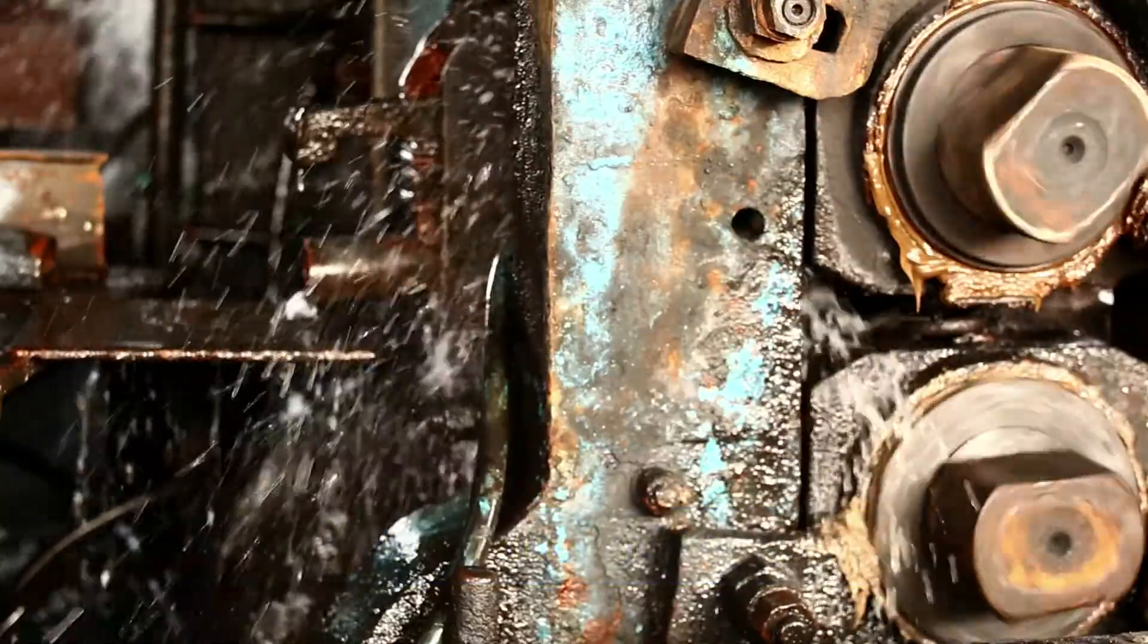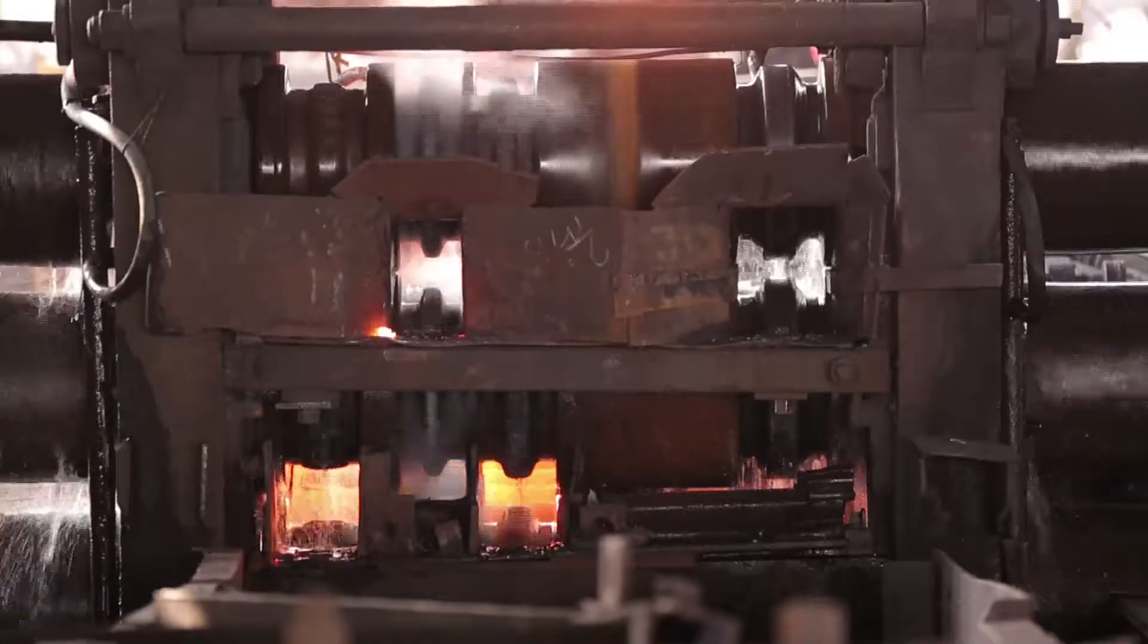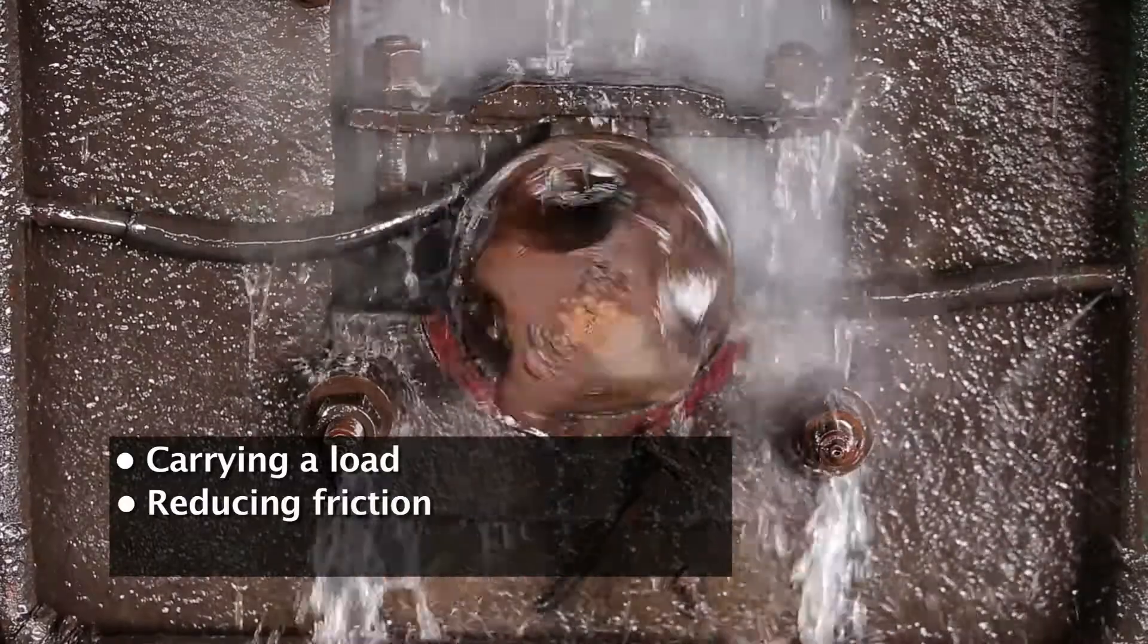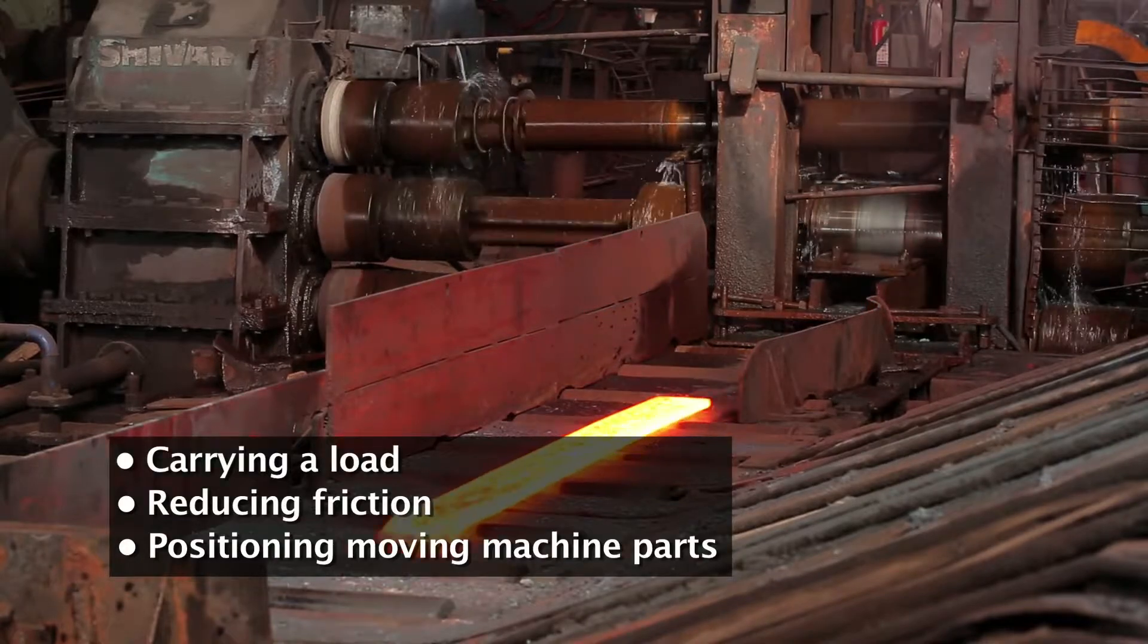Bearings are one of the most critical equipment in a rolling mill and they perform three basic functions: carrying the load, reducing friction, and positioning moving machine parts.